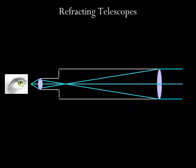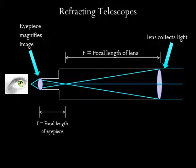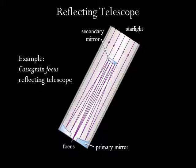Here is a figure showing how a refracting telescope works. The main lens collects the light — the larger the lens, the more light you get. The lens will create an image at the focus. The focal length is the distance from the lens to the focus. An eyepiece is used to magnify the image. The eyepiece has a focal length too. The magnification of any telescope is the ratio of the focal length of the main lens over the focal length of the eyepiece.